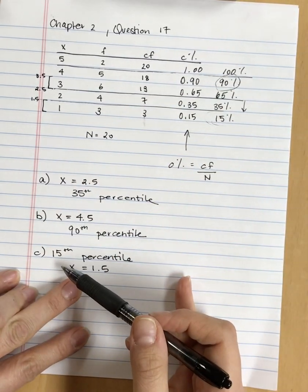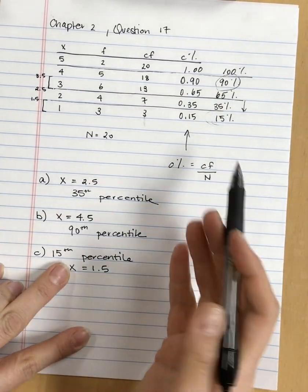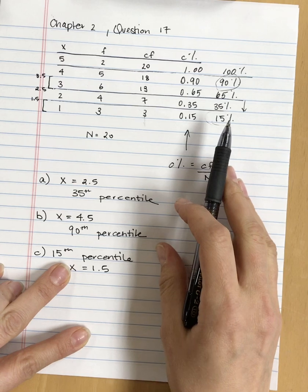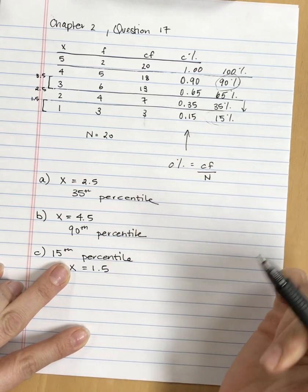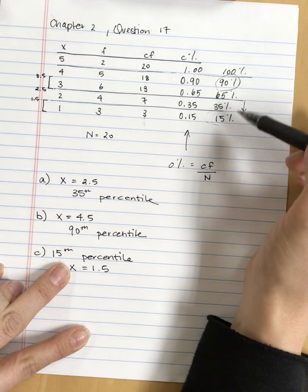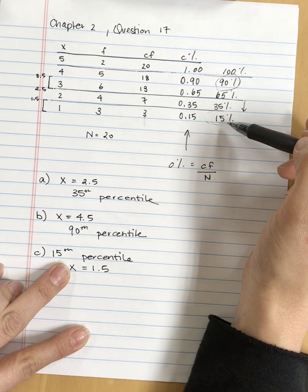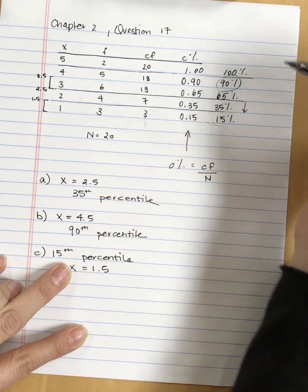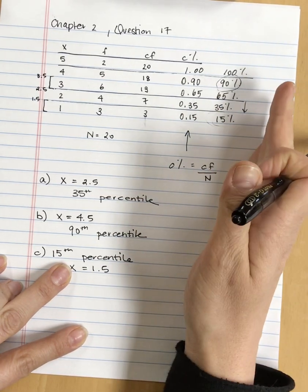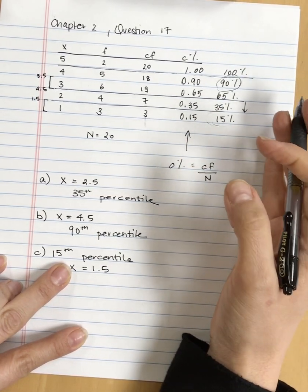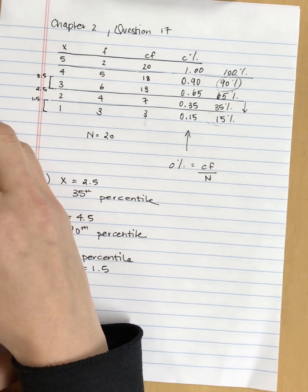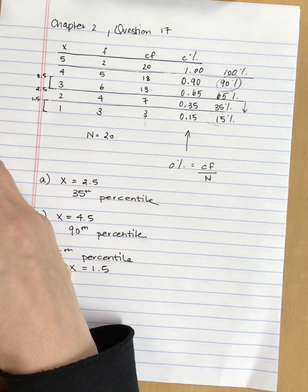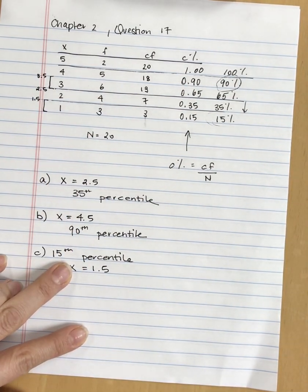Question 17c asks, what is the x-score that's associated with the 15th percentile? The way to figure that out is to look in our cumulative percentage column, and if the percentile that we're looking for is listed in this column, then just like with question A and B, we can read the value directly off of our table, our frequency distribution.